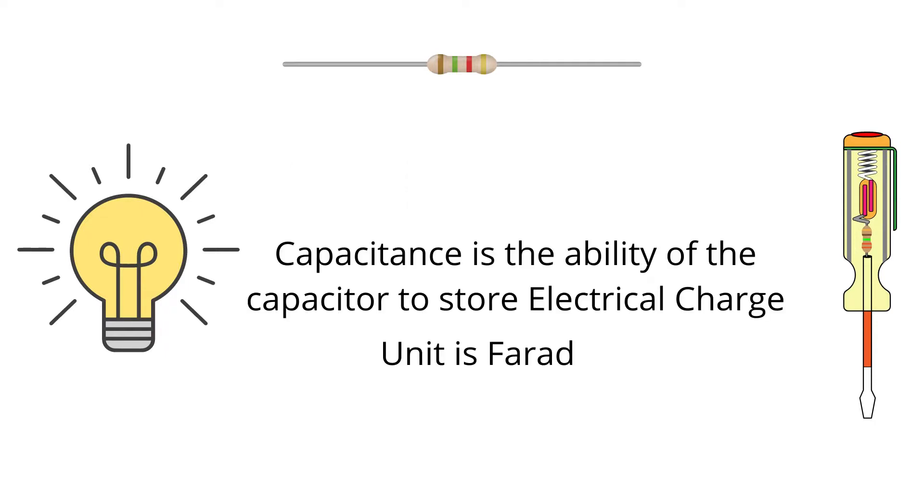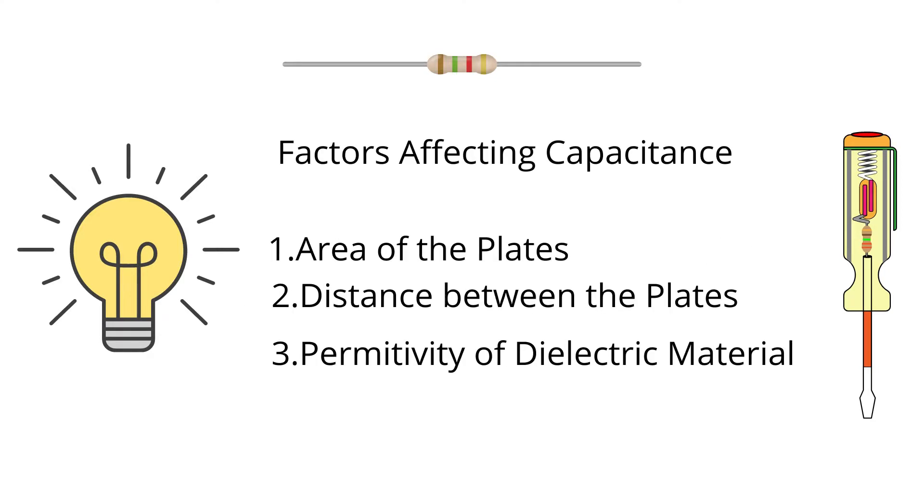Now the ability of the capacitor to store electric charge is known as capacitance, which is charge developed across the capacitor by unit voltage, and generally it is denoted by the unit of Farad. Now there are three factors affecting the capacitance of a capacitor.